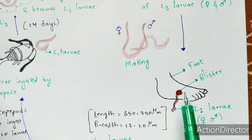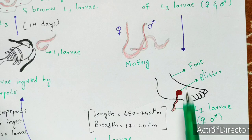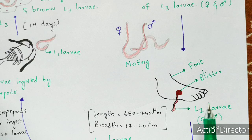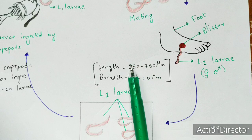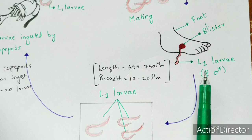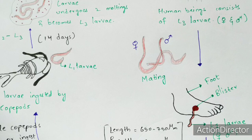From this blister, L1 larvae — that is first stage larvae — will protrude out. These larvae will be in both forms: male worm and female worm. The length of these L1 larvae ranges from 650 to 750 micrometers in length and 17 to 20 micrometers in breadth. This protrusion occurs only when the foot is exposed to water, such as when the person is bathing in a lake, pond, or ocean.